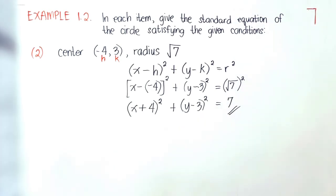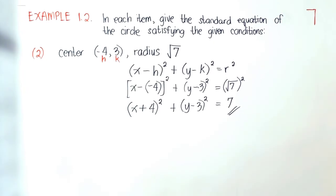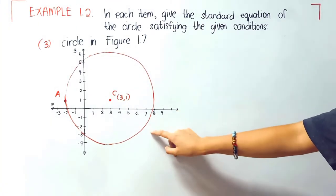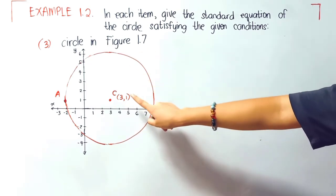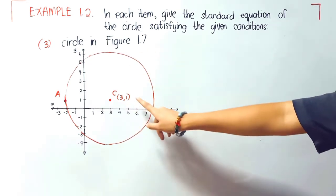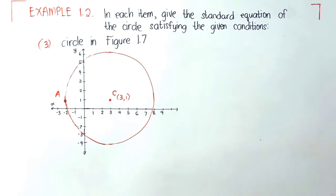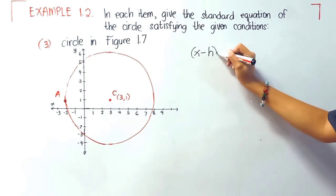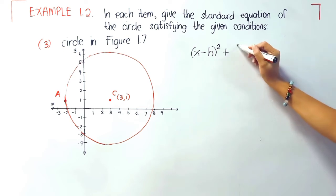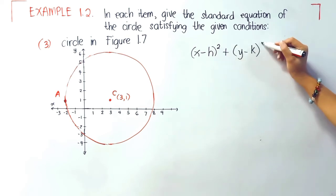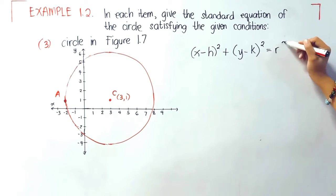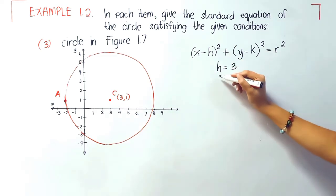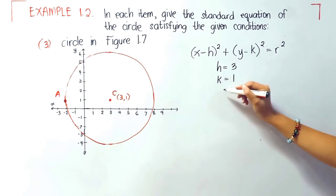So this is our final answer. Let's now proceed to problem 3. We will consider the circle in figure 1.7. As you can see, the circle has center 3, 1, which is not at the origin, so we'll be using x minus h quantity squared plus y minus k quantity squared is equal to r squared. Our h is 3, our k is 1.